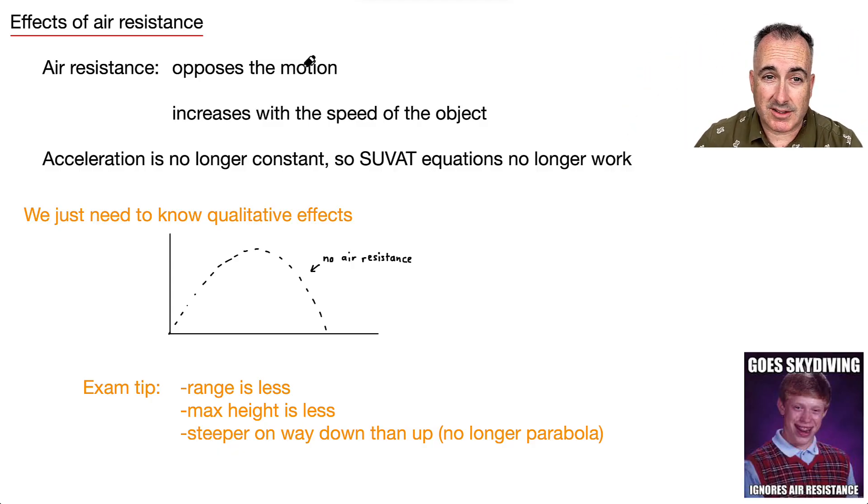But air resistance, what it does, of course, it opposes the motion. In other words, if you're flying one way, then air resistance will act the opposite way. It's a frictional force, just like friction does. And the faster you go, the more air resistance there is. That's the key thing here. So air resistance opposes the motion and increases with the speed of the object. These are the key things with air resistance.